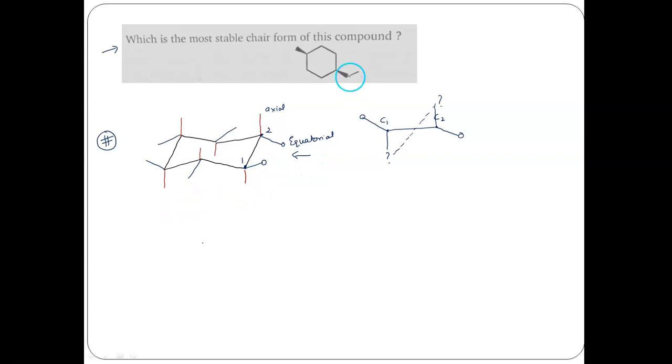In this question, we can see that in a cyclohexane ring, we have two substituents, one is ethyl and second is methyl. Out of this, the most bulky group is ethyl. So therefore, preferably we will try that it occupies the equatorial position.